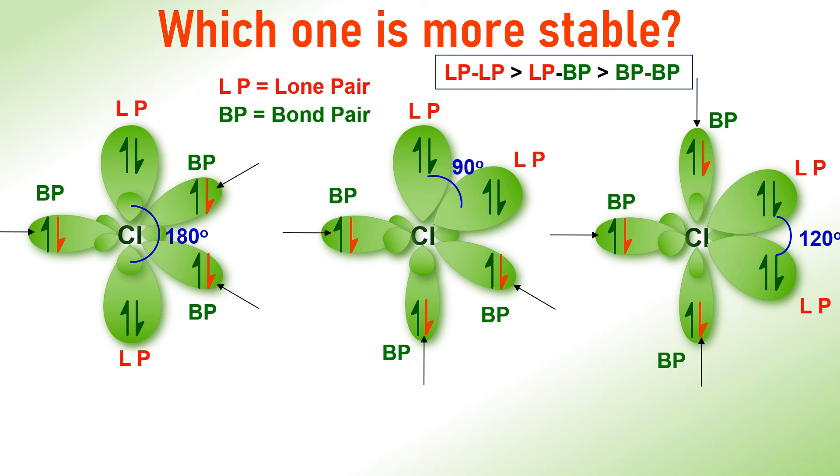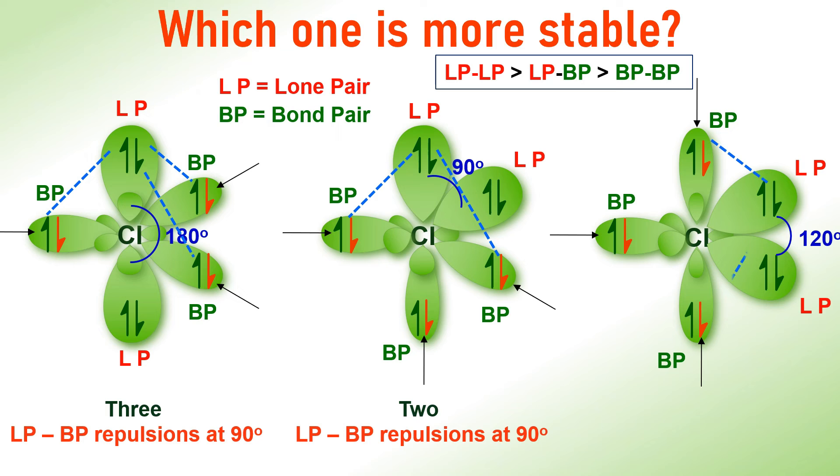Each lone pair in the left hand side arrangement experiences three lone pair and bond pair interactions at 90 degrees. Whereas, in the middle and the right one, each lone pair experiences only two lone pair and bond pair interactions at 90 degrees. By considering all of these interactions, we can conclude that the right hand side arrangement is more stable than the other arrangements.